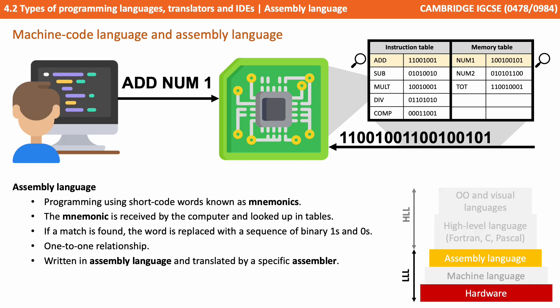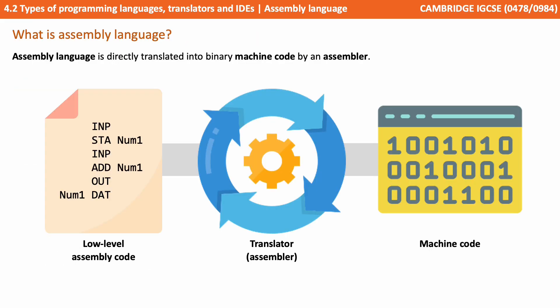These programs are written in assembly language and translated by a specific assembler. Here we see a simple diagram: on the left we have our source code written in a given low-level assembly language. This is then translated by an assembler — not compiled or interpreted as with high-level languages — resulting in processor architecture-specific machine code.